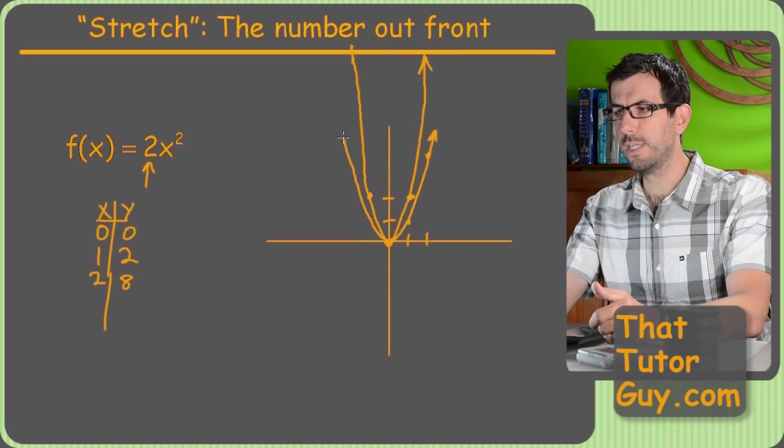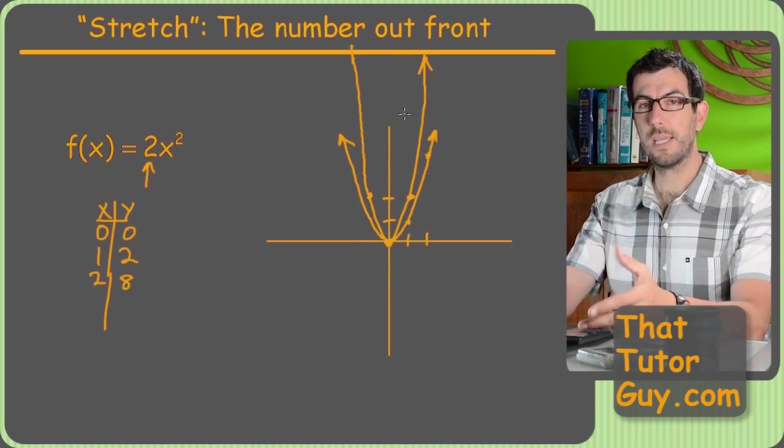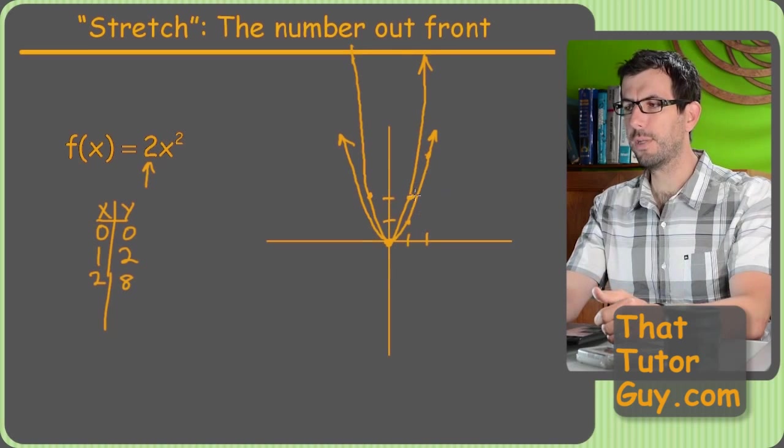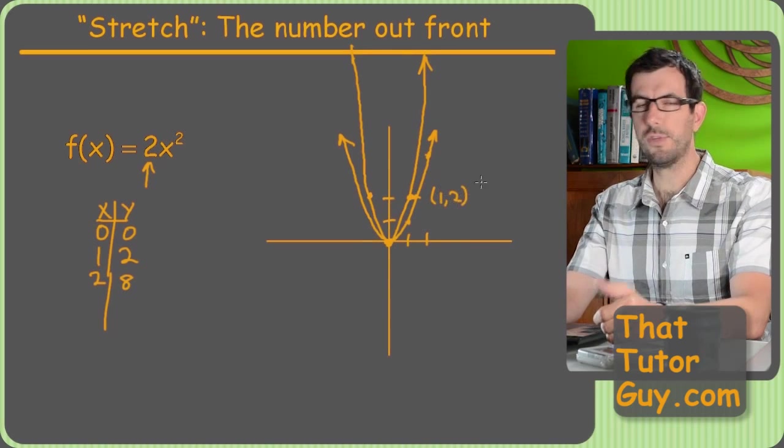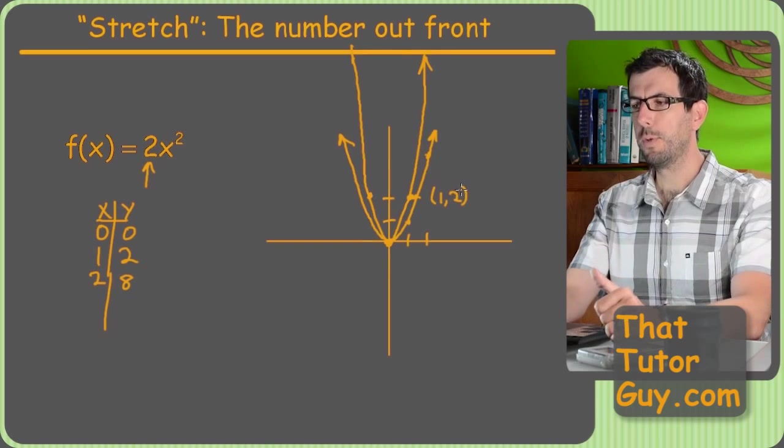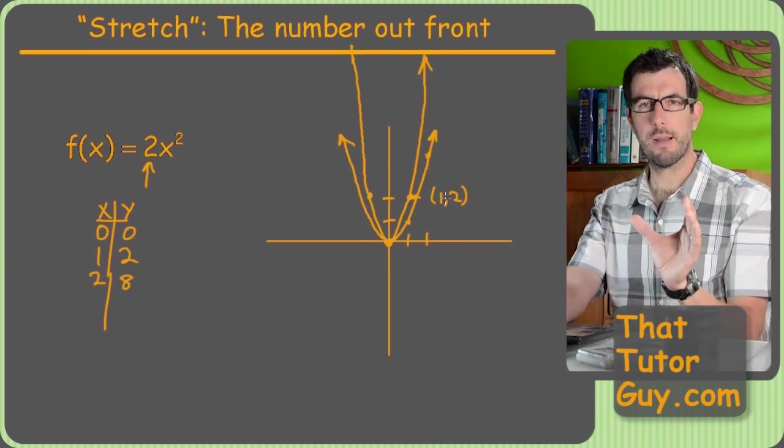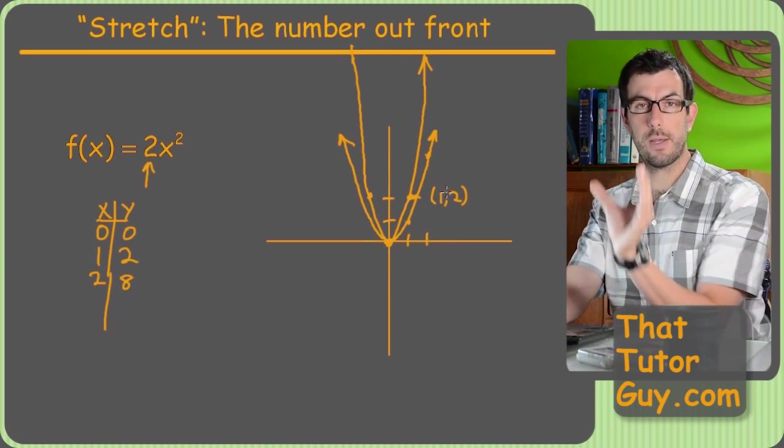So you can see the difference is not very big between the two. And that is the reason that your teacher can't really bust you for these, unless you have a teacher who makes you like label some points, like maybe you have a teacher that makes you put one comma two on the graph just to really show you know what you're doing. But most teachers will settle just for the graph because all they care about is that it's in the right place, like you got the shifts right.